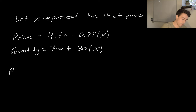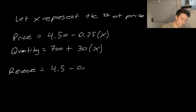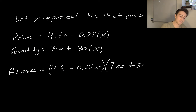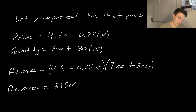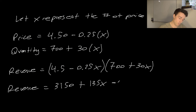Revenue equals price times quantity, so revenue equals (4.5 minus 0.25X) multiplied by (700 plus 30X). I'm going to expand this out: 4.5 times 700 gives 3,150; plus 4.5 times 30 gives 135X; minus 0.25 times 700 gives negative 175X; minus 0.25 times 30 gives negative 7.5X squared.